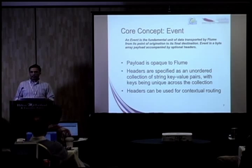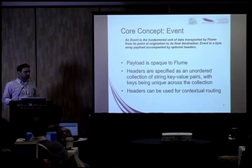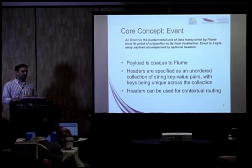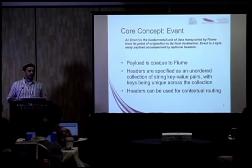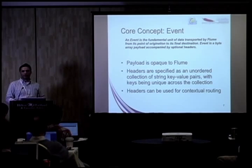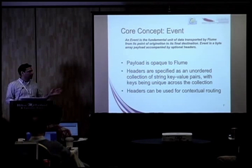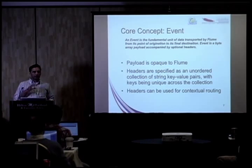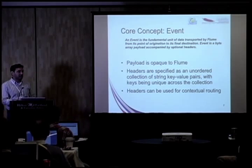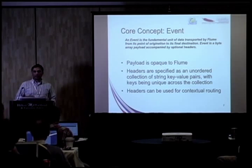What Flume does care about is optional headers, which can be applied to the event. The concept is inspired by how SMTP routing works, where you have key-value pairs that carry the envelope information for your payload. Similar information can be added to headers in Flume, and then you can configure Flume to react to the presence of certain headers — thus achieving contextual routing. You can also manipulate these headers as the event trickles down the pipeline.